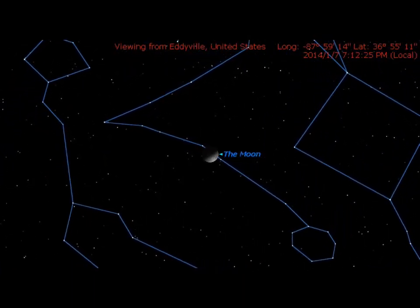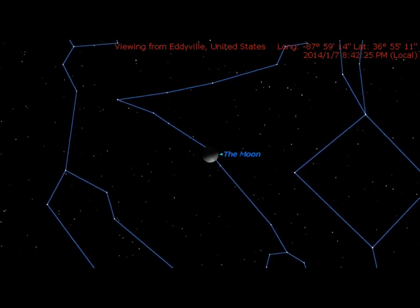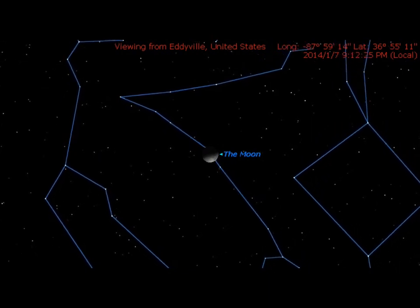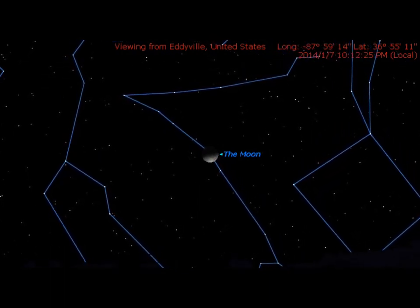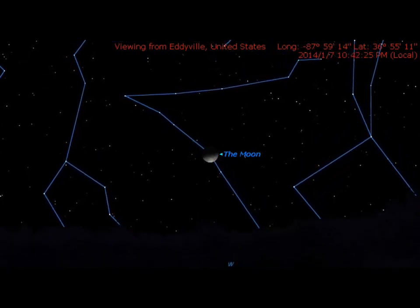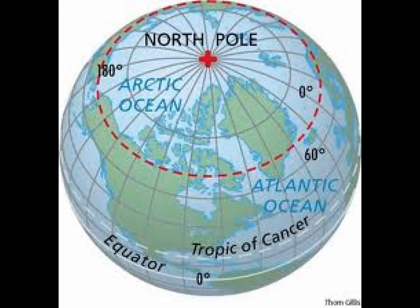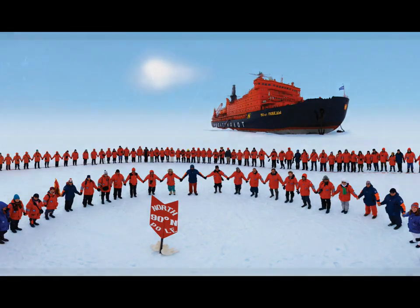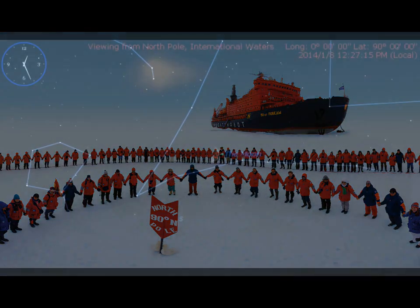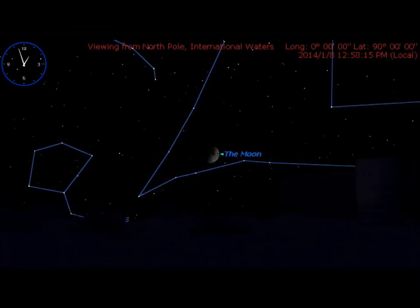The further away you are from these two points, the more you will see the moon flip or rotate as the night wears on. Now if you were to stand at the north pole or the south pole, we would not see the moon turning or flipping as the night progresses.